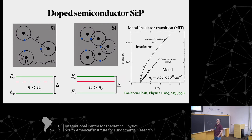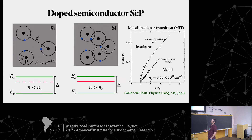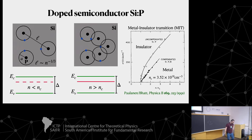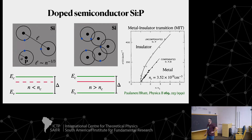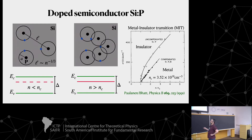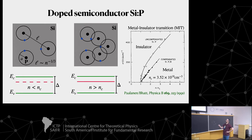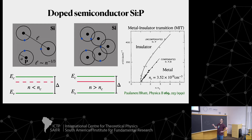The key result is the metal-insulator transition. If you have no dopants — no phosphorus — this is the silicon matrix. Each phosphorus adds an extra electron. If the concentration of phosphorus is low enough, the phosphorus atoms are far apart and you still have an insulator with discrete impurity levels inside the band gap. If you increase the density above the critical concentration, you create an impurity band inside the gap and your system becomes a metal.